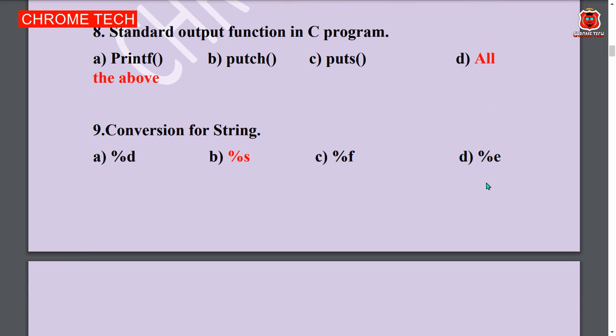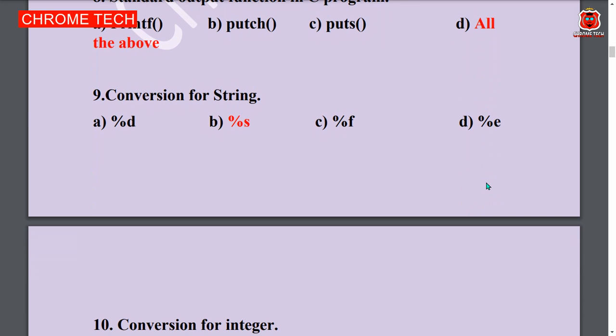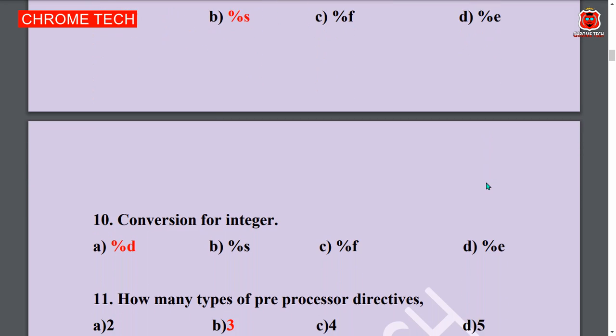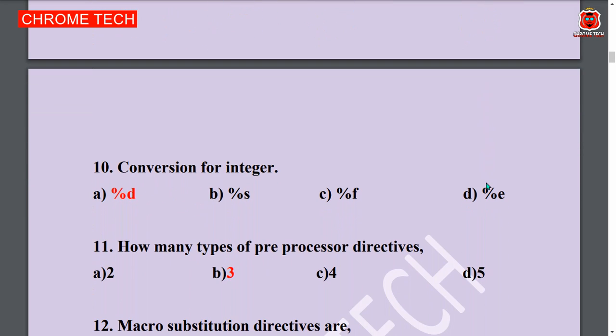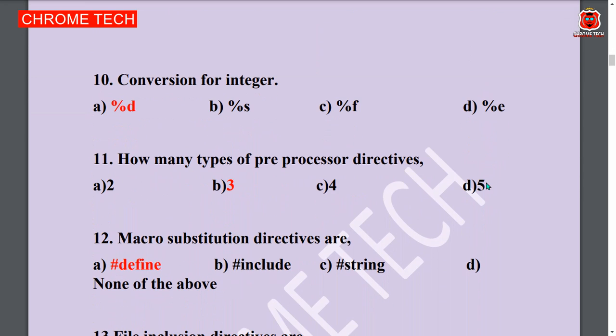Ninth question: Conversion for string. Option B is the answer. Next question: Conversion for integer. Option A is the answer. Next question: How many types of preprocessor directives? Option B is the answer — three.